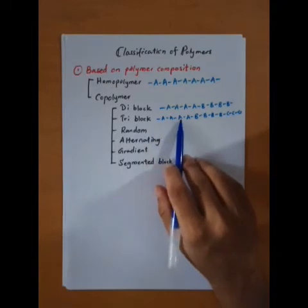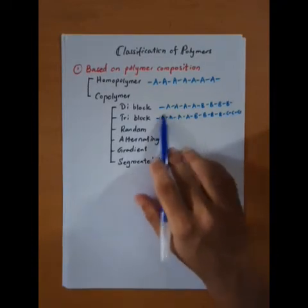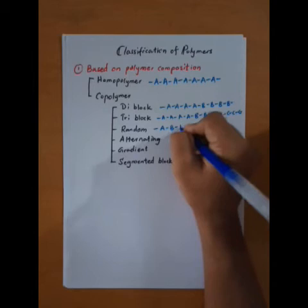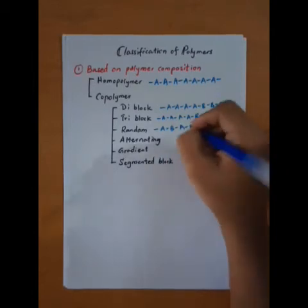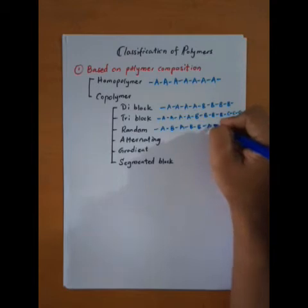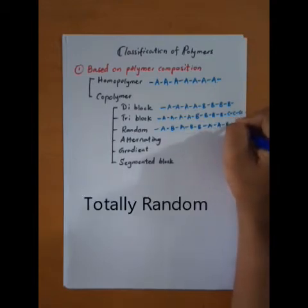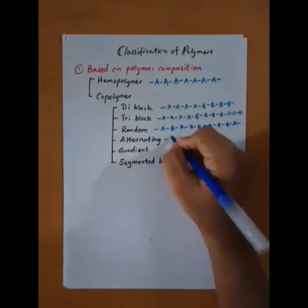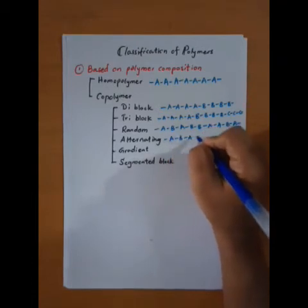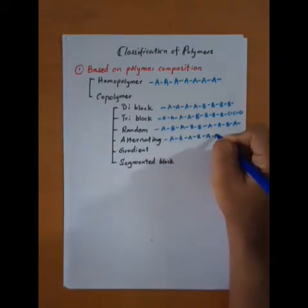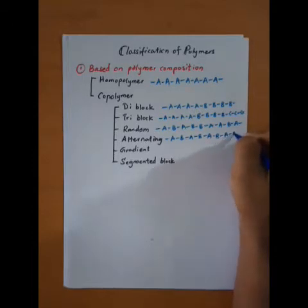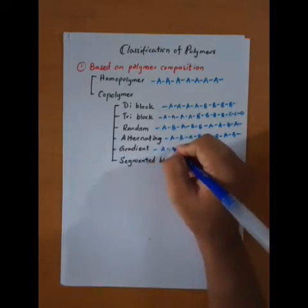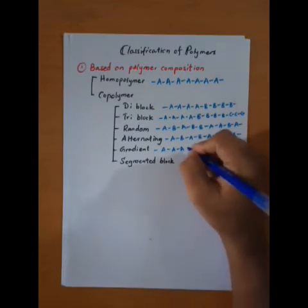In a triblock copolymer we have three monomer blocks: one block of A, one block of B, and one block of C. In a random copolymer there is no particular arrangement of monomers. In an alternating copolymer, monomer A and monomer B alternate regularly.